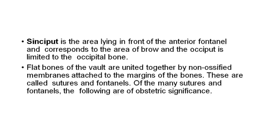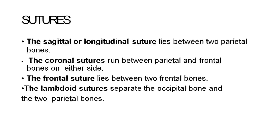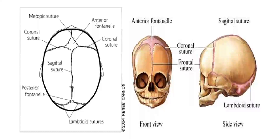These are called sutures and fontanelles. Of many sutures and fontanelles, the following are of obstetric significance. Sagittal suture or longitudinal suture lies between the two parietal bones. Coronal sutures run between the parietal and frontal bones on either side. Frontal suture lies between the two frontal bones. Lambdoid sutures separate the occipital bone and two parietal bones.